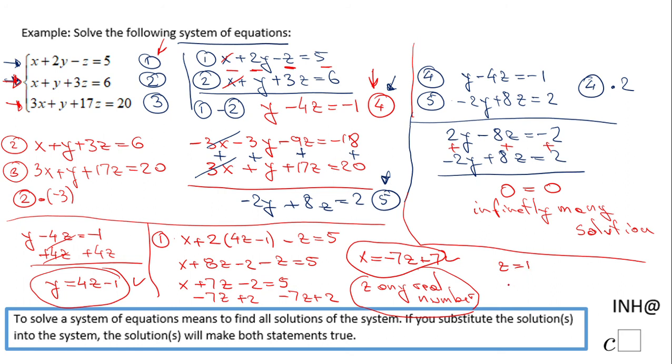For instance, if I pick z = 1, I will end up with a y of 4 times 1, which is 4 - 1 = 3, and an x of -7 times 1, which is -7 + 7 = 0. So a possible solution is (0, 3, 1). But like I said, we have infinitely many solutions.